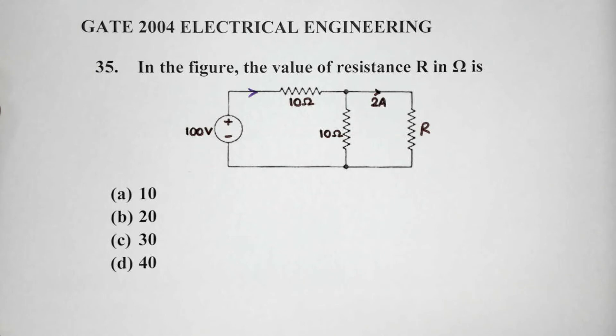Now, here's the next question, number 35. In the figure, the value of the resistance R in ohms is. We have our options: 10, 20, 30, and 40.